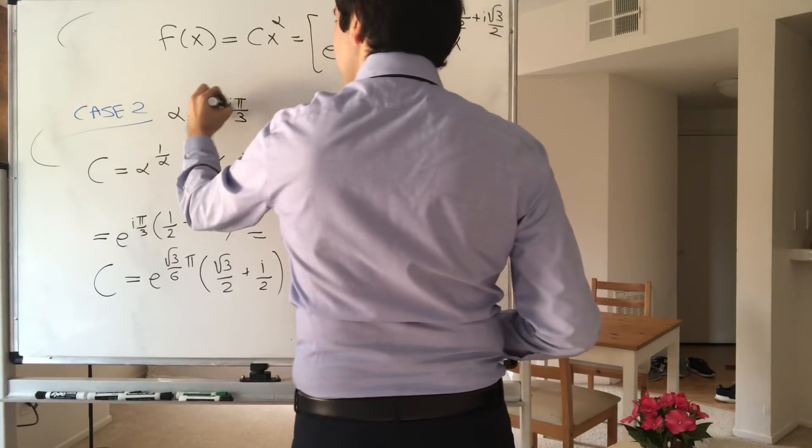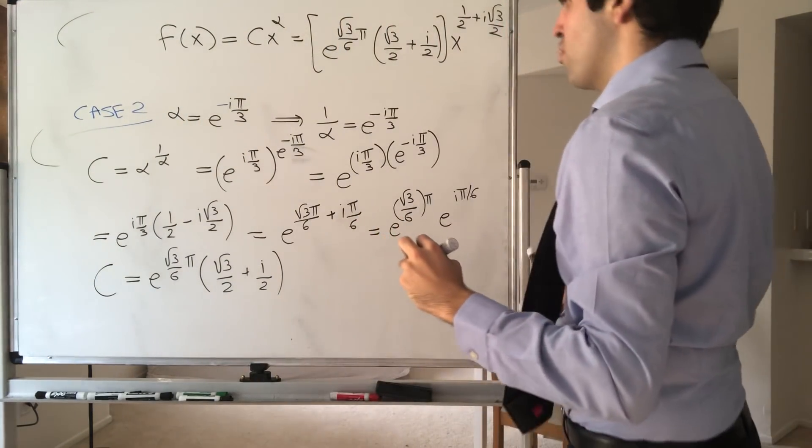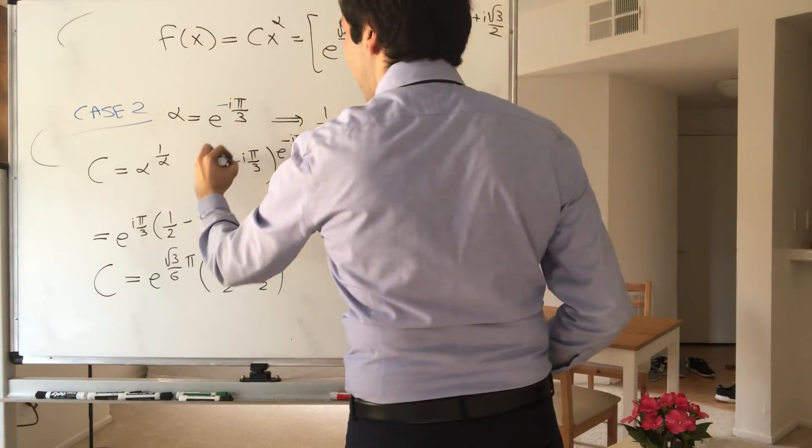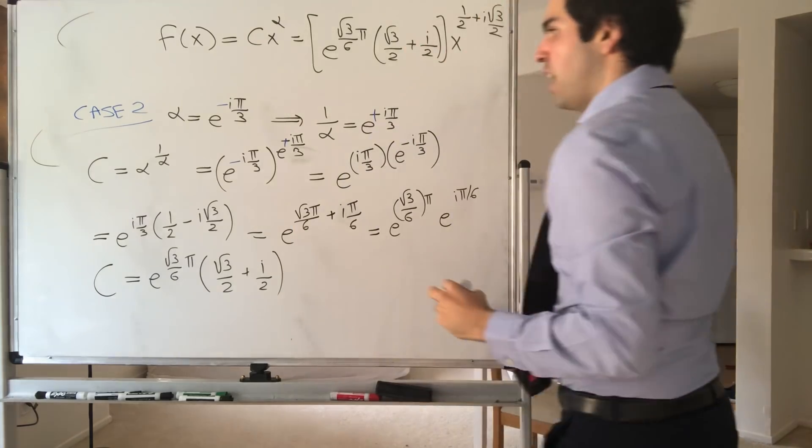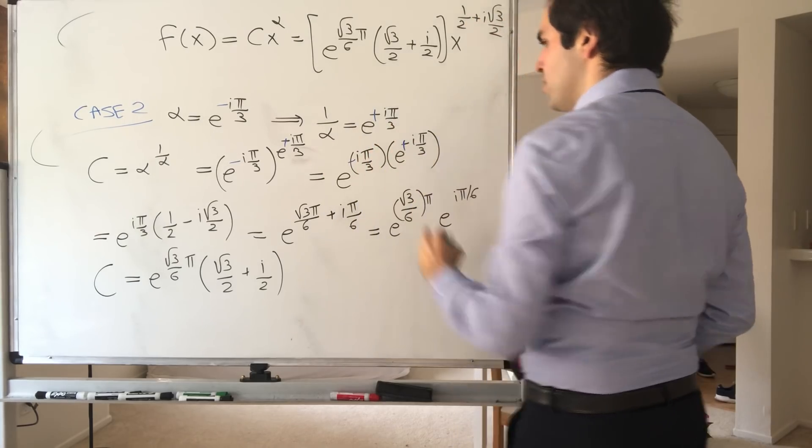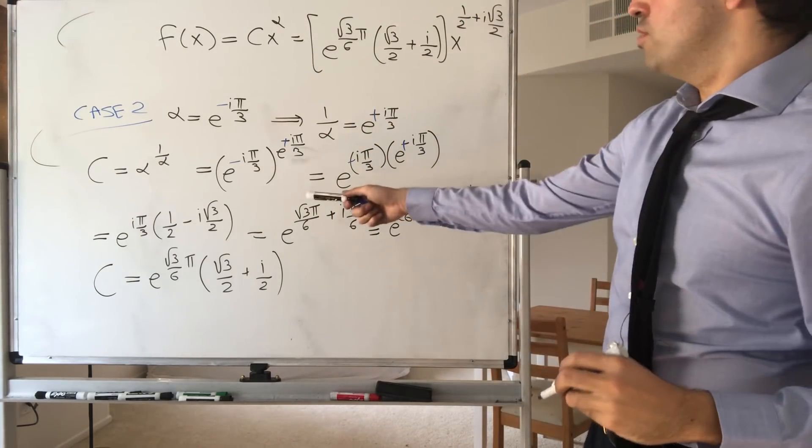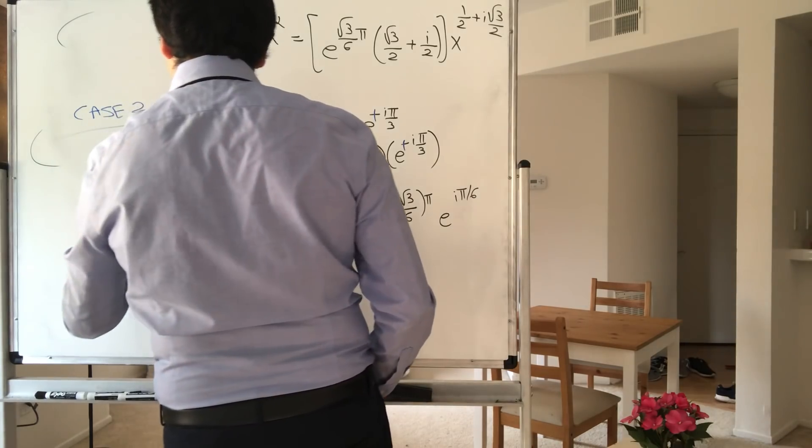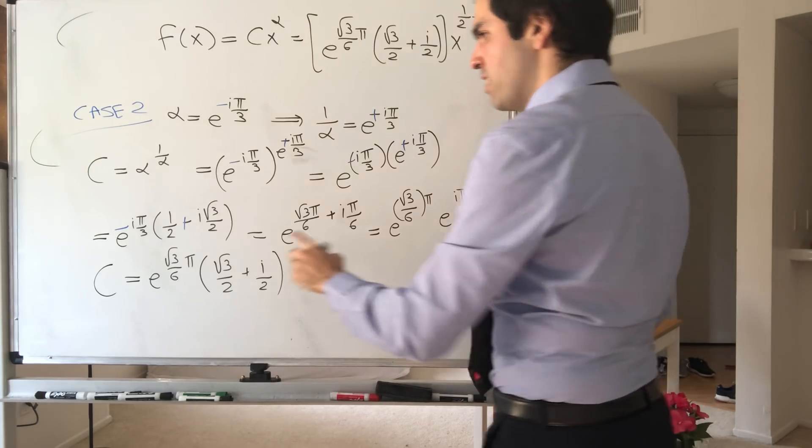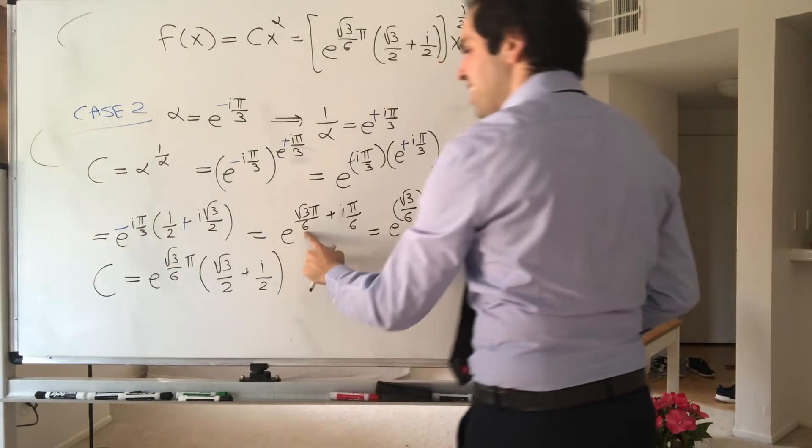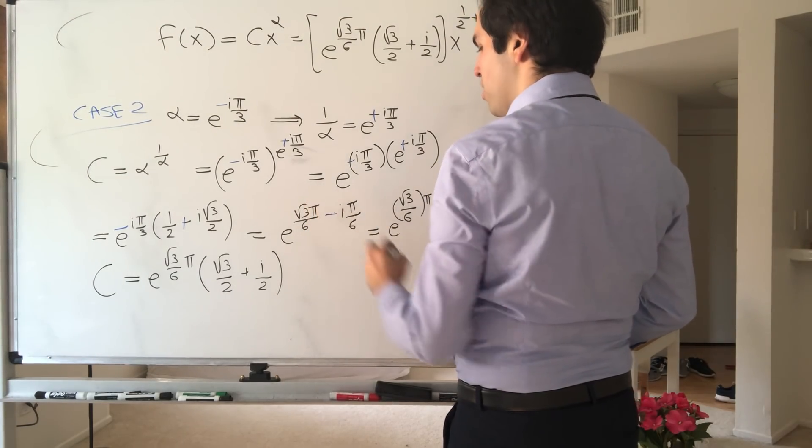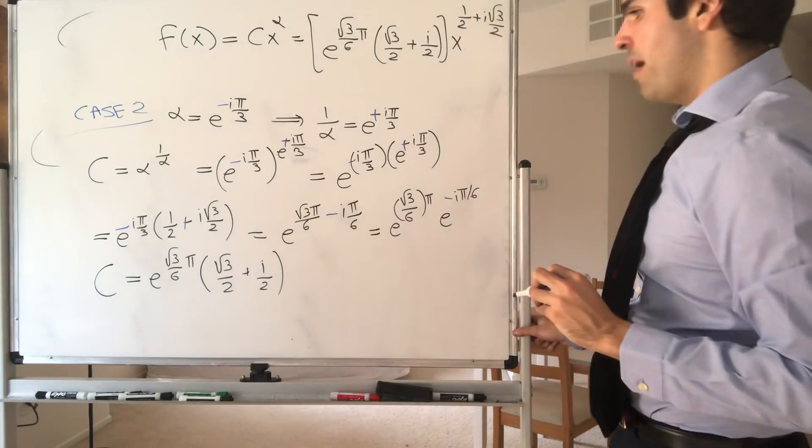So let me just show you the modifications. So now, if alpha is e to the minus i pi over 3, then 1 over alpha is e to the plus i pi over 3. So you're doing e to the minus i pi over 3 times e to the plus i pi over 3. And again, you just multiply the exponents. And then you get, so e to the minus i pi over 3, 1 half plus i square root of 3 over 2. And then this just becomes, so minus i times i is still plus.